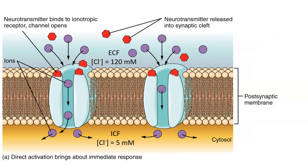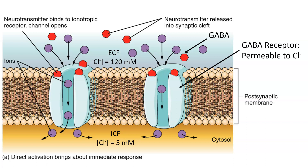Let's look at an example. In this scenario, we have a neurotransmitter called GABA, and it corresponds to an ionotropic receptor — the GABA receptor. It turns out that the GABA receptor is permeable to chloride ions. I've given you the concentrations of chloride inside and outside the cell. Based on what we know, predict whether the membrane potential would depolarize, hyperpolarize, or stay the same when GABA binds to its receptor. I'll give you a little bit of time to work this out.